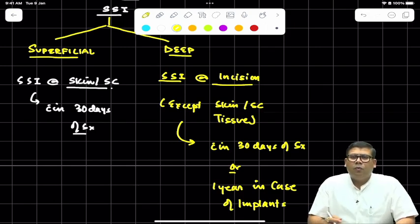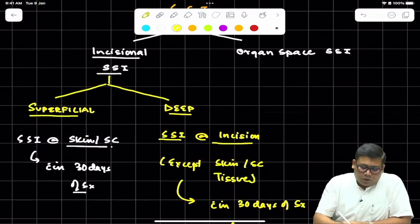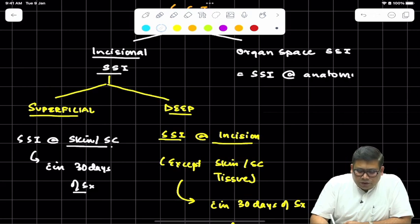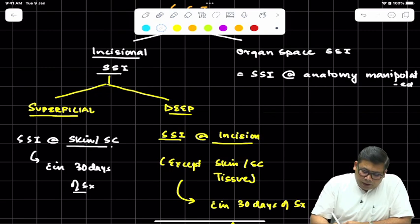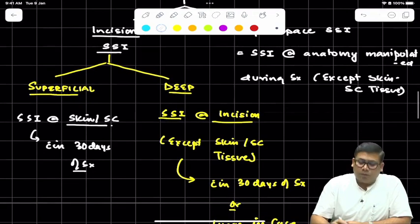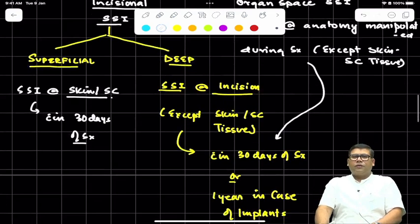Let us understand more important things. What is the concept of organ space SSI? It is defined as SSI along the anatomy manipulated during surgery. When we say anatomy manipulated during surgery, the key word is: anatomy manipulated during surgery except skin and subcutaneous tissue. The time window is the same: within 30 days of surgery or one year in case of implants.